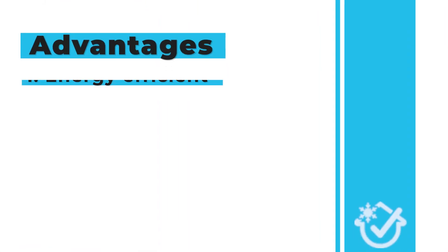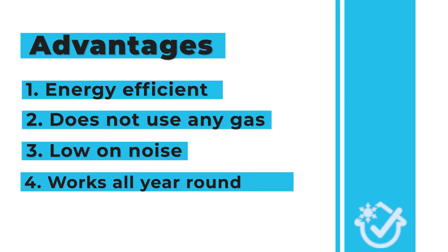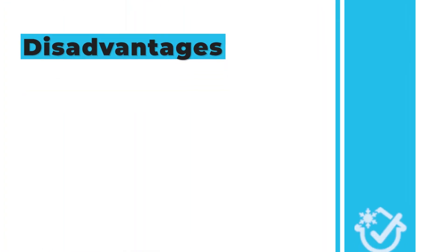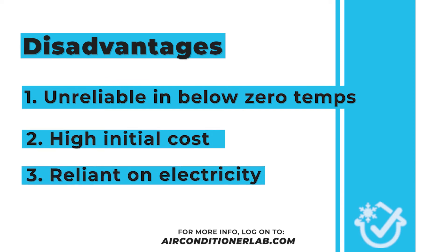Here are some pros and cons of residential air source heat pumps. Advantages of installing a heat pump: energy efficient, does not use any gas, low on noise, and works all year round. Disadvantages of installing a heat pump: unreliable in below-zero temperatures, high initial cost, and reliant on electricity.